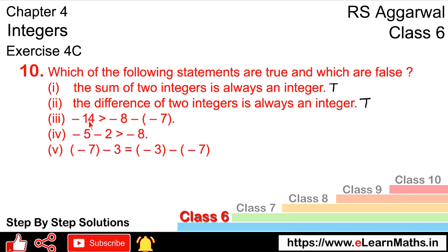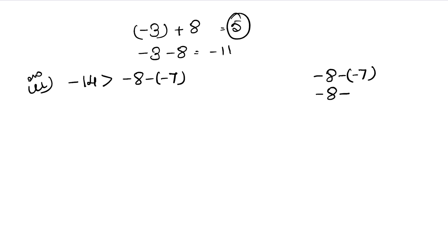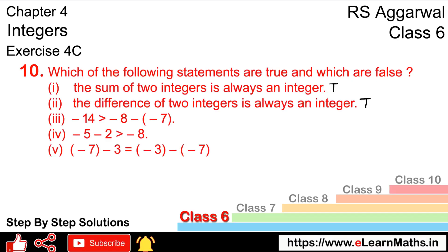Let's do the third part. The third part is: is minus 14 greater than minus 8 minus minus 7? We solve the right side: minus 8 minus minus 7 equals minus 8 plus 7 equals minus 1. So the question becomes: is minus 14 greater than minus 1? Minus 14 is not greater than minus 1. Hence, this statement is false.